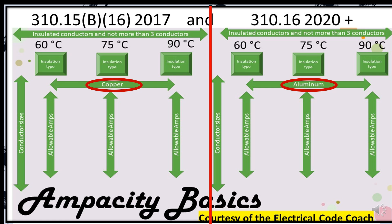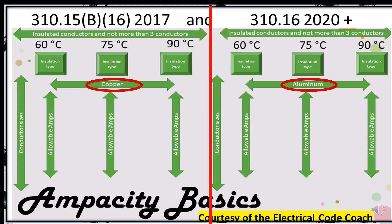Now let's take a quick breakdown of the table. We read all of our tables from top to bottom, left to right. Focus on the left hand side because that's the copper side, but everything we do is mirrored on the aluminum side. Starting at the top, it gives us the scope of the table. Then you'll notice there's 60, 75, and 90 degrees C columns. Below that are the insulation types like THHN and THWN. On the left hand side you have the conductor sizes, and in the middle you'll find the allowable ampacity for each respective column.